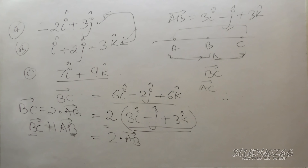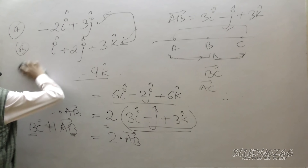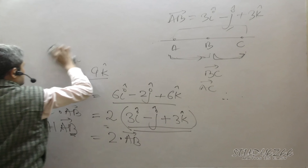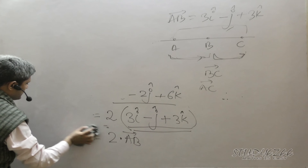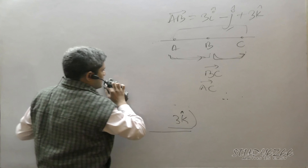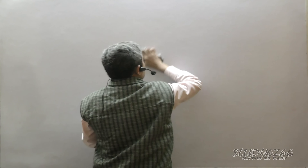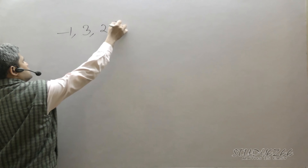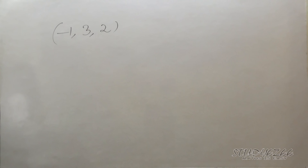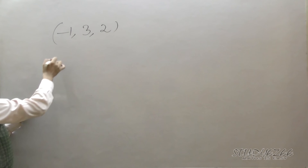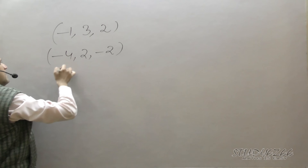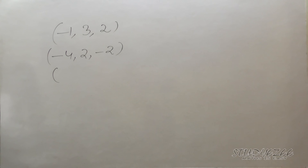These are the two approaches for collinear proof. If we have Cartesian points instead of position vectors, we use the equation approach: take the straight line equation from two points, then substitute the third point. For example, given points (−1, 3, 2), (−4, 2, −2), and (5, 5, 10), prove collinearity.